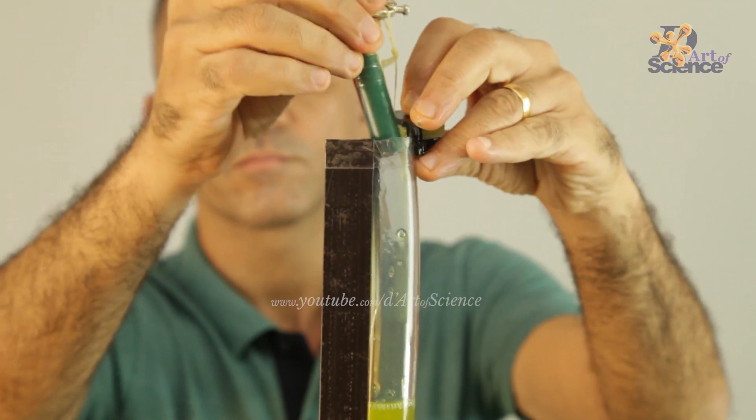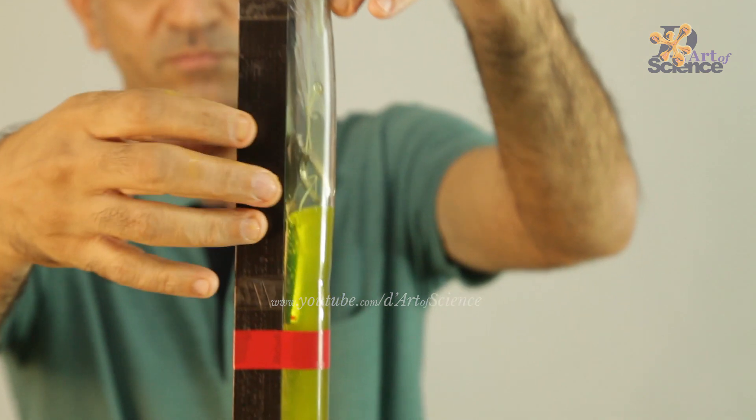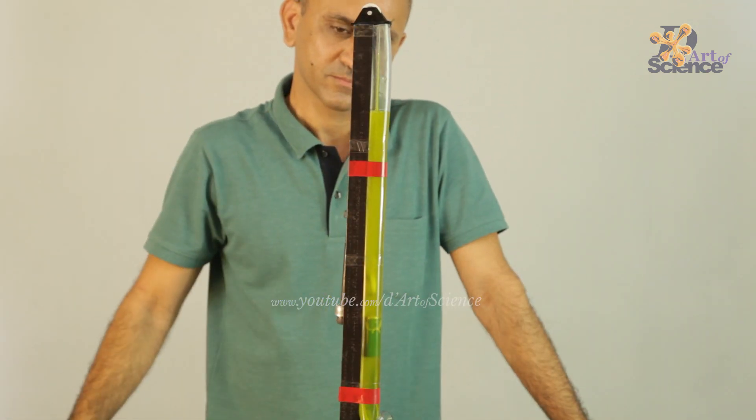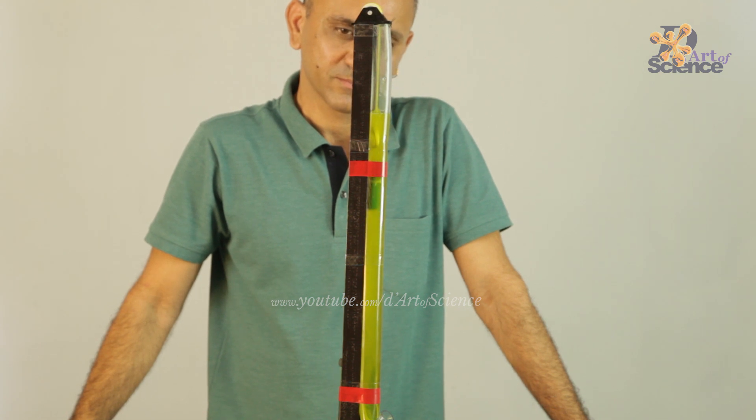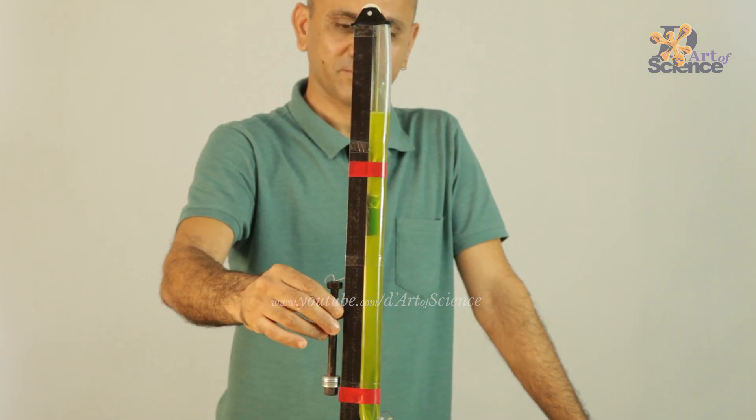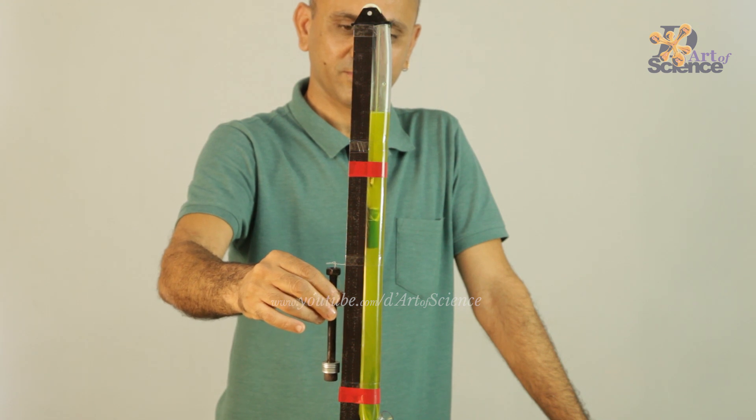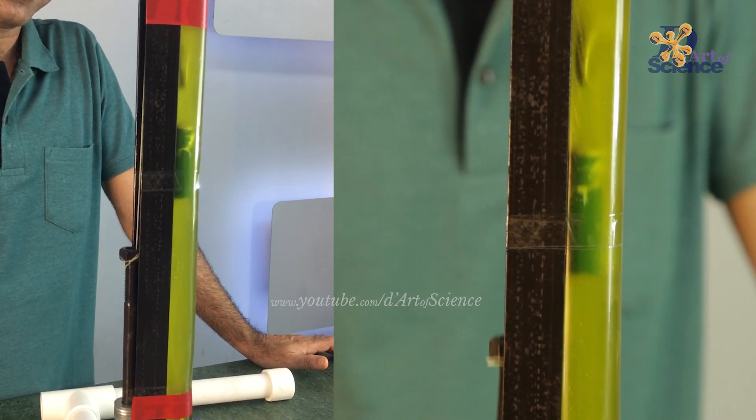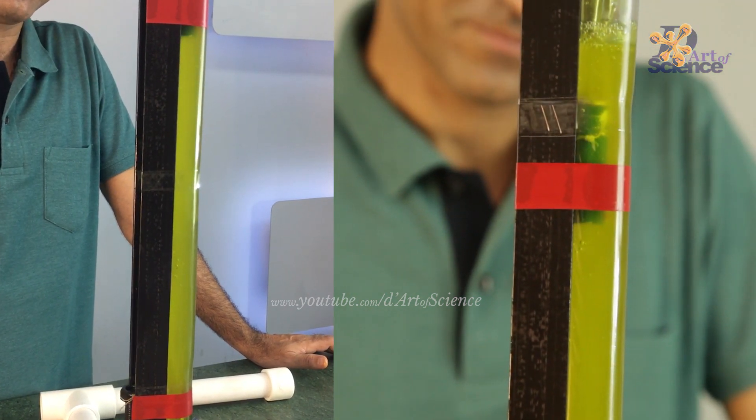Now let's try the flat top cylindrical shape. Ideally it should take the longest. Wow, it took 4.28 seconds. Clearly streamlining had helped to reduce the friction earlier. Now since it's flat in the front, the friction is really high and the object is going really slow.